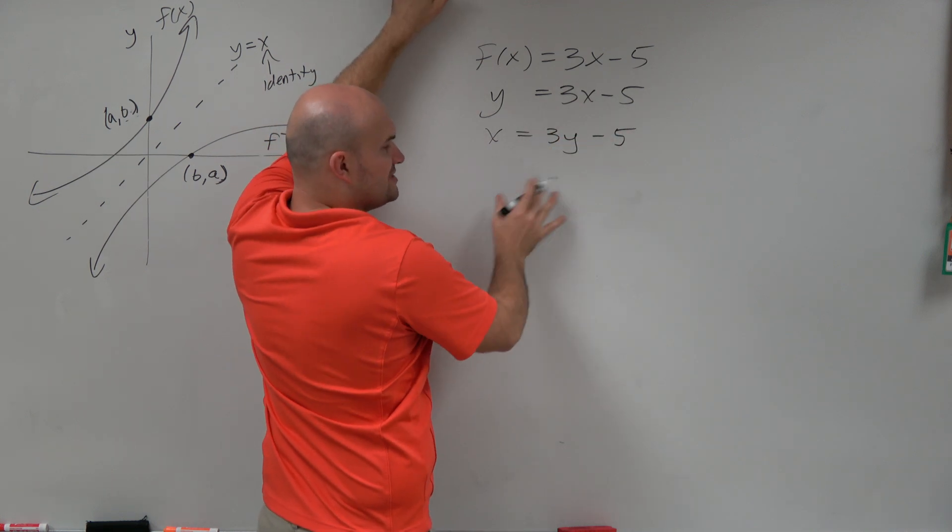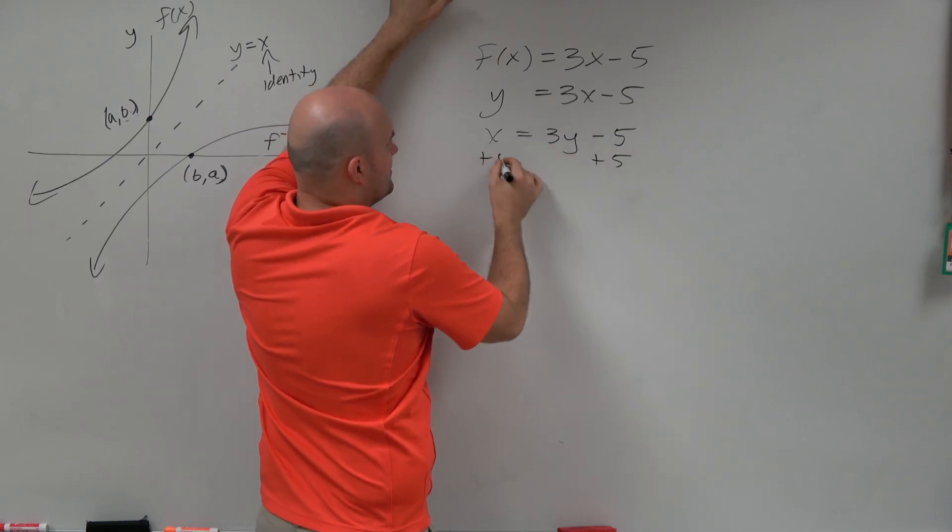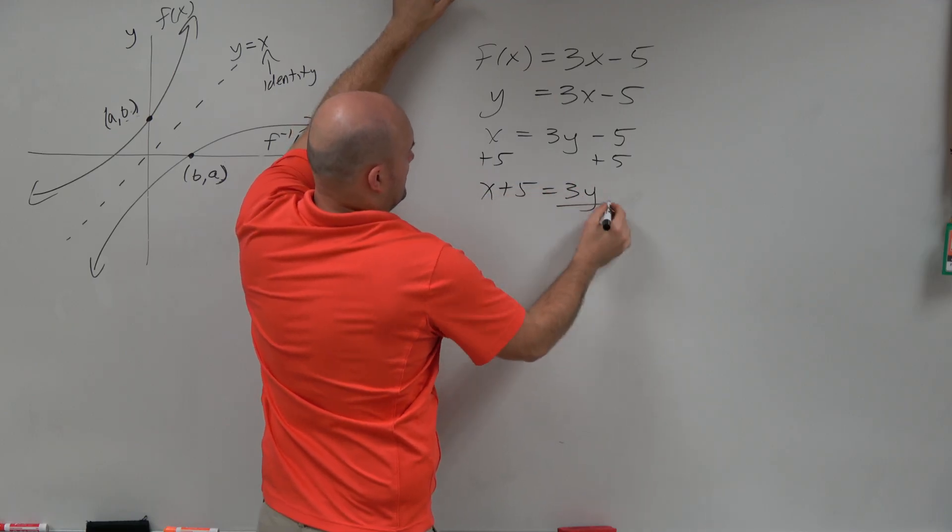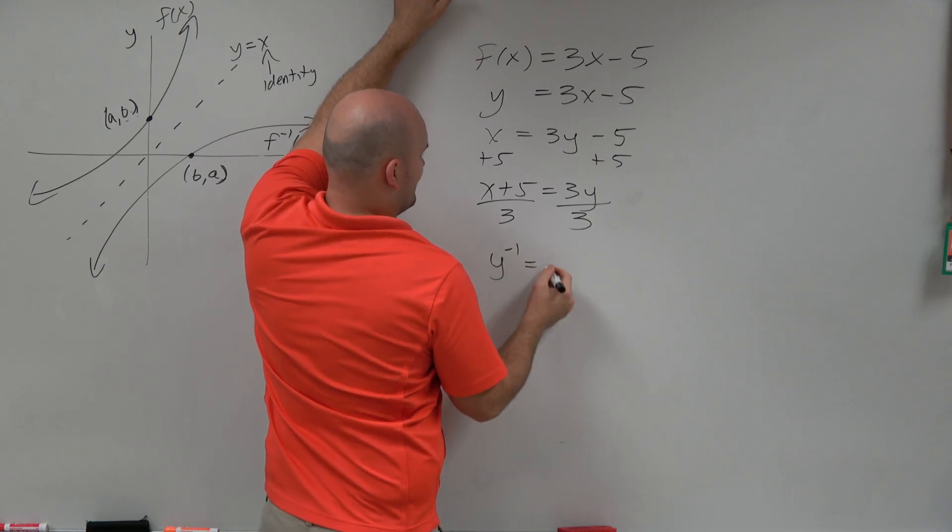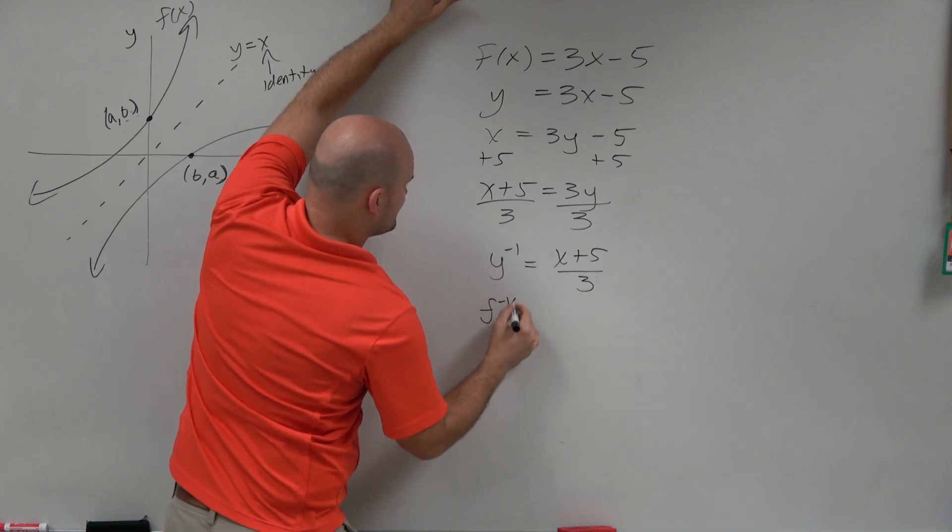So if these x and y represent coordinate points, then you swap them. Then, to solve for this, you're going to use inverse operations to now solve for y. So you could write it as y inverse, if you were originally given the equation as y, or you'd use function notation.